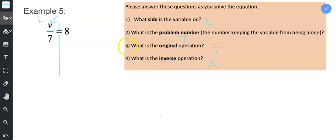So we're going to multiply both sides by the number that is keeping the variable from being alone. So remember you're always multiplying by or adding by subtracting by that number that is keeping the variable from being alone. So we are going to multiply by 7.